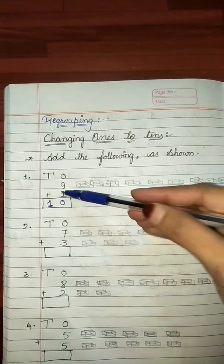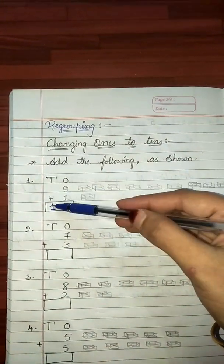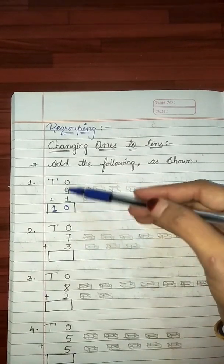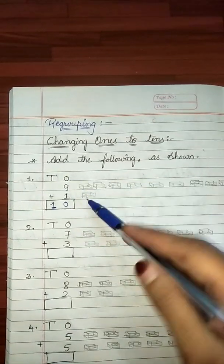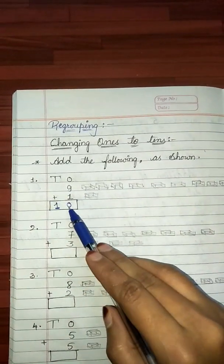Understood? 0 ones, 1 ten. Means 1 ten, 0 ones. That is, the answer is 10.